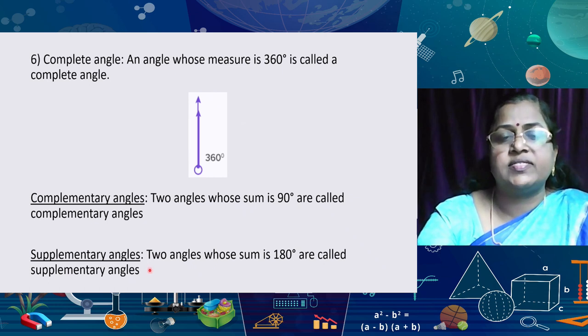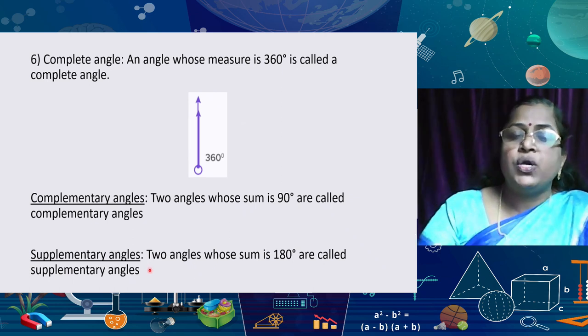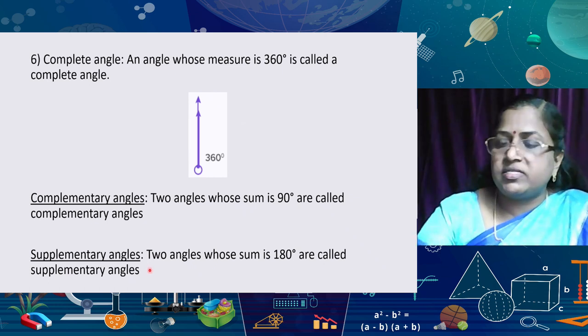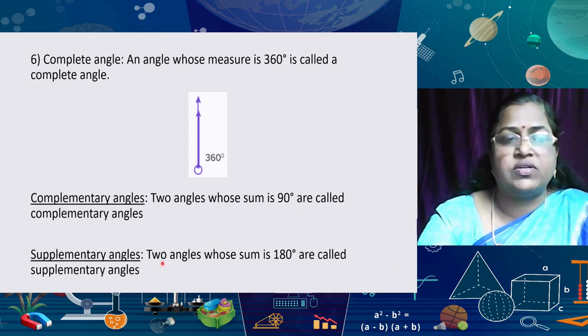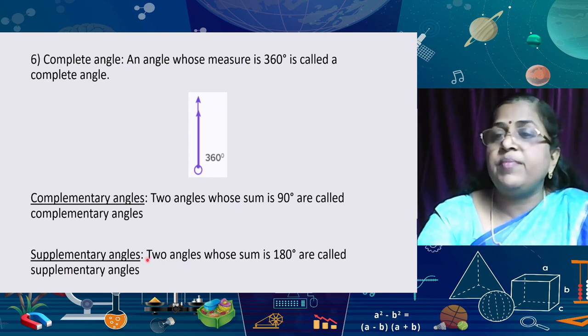Now, supplementary angles: two angles whose sum is 180 degrees are called supplementary angles.